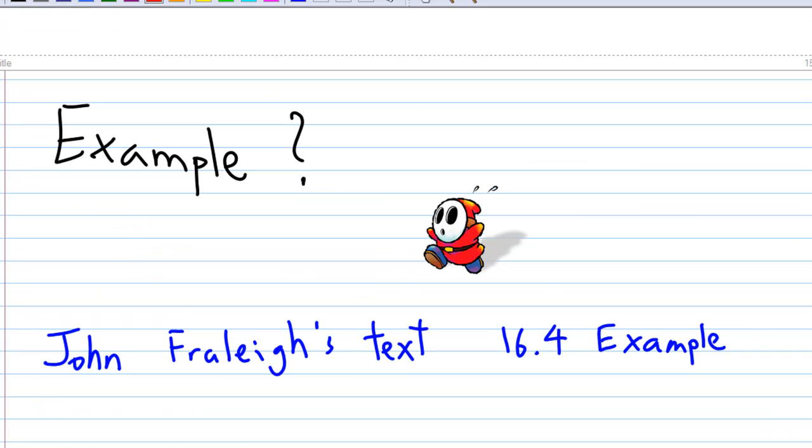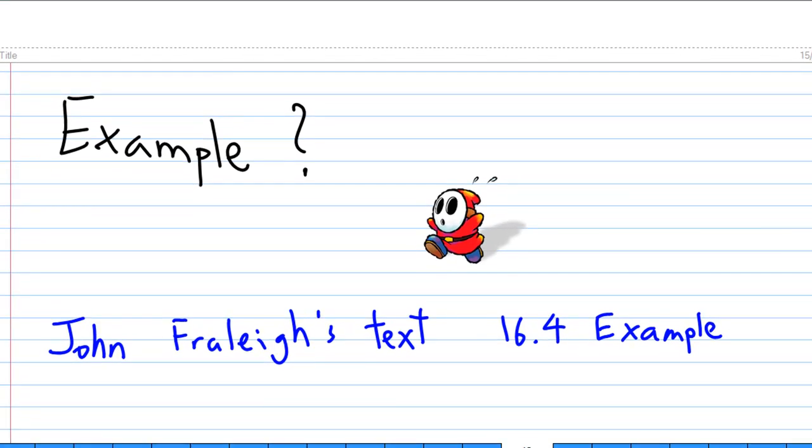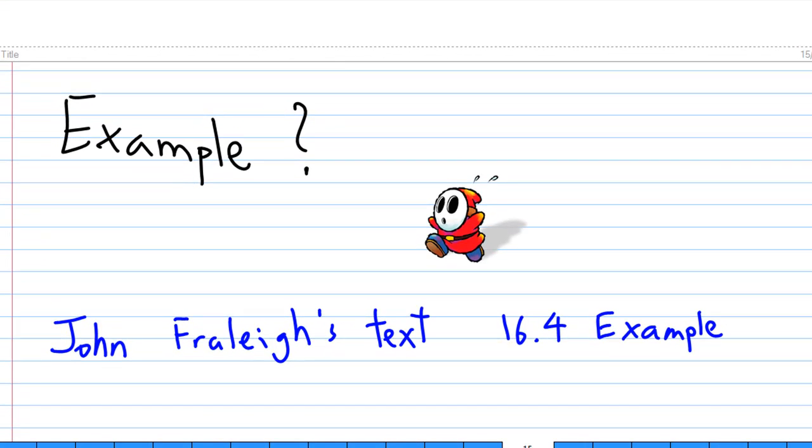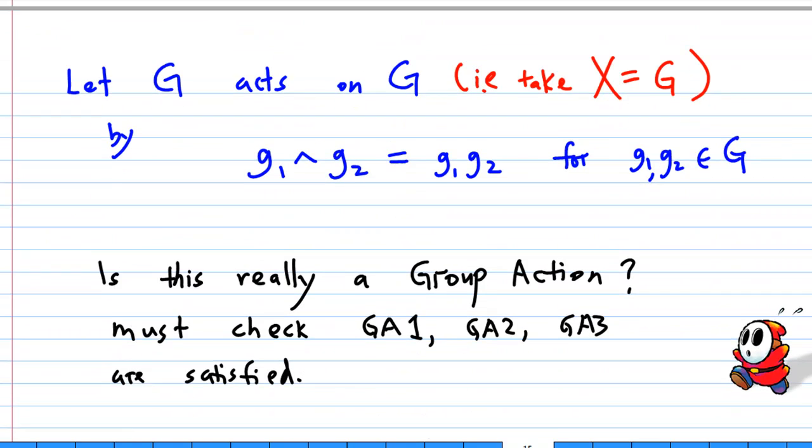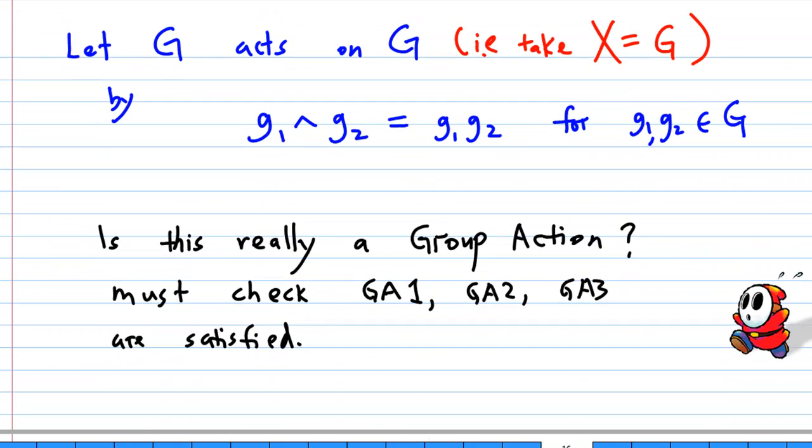Now, can I have an example of a faithful group action? Yes, you can find this in John's Fraleigh text 16.4 example. It says that let G act on G, that is you take the set X equal to G, and define a group action as g1^g2 will be g1 times g2 for any g1 and g2 in the group G.